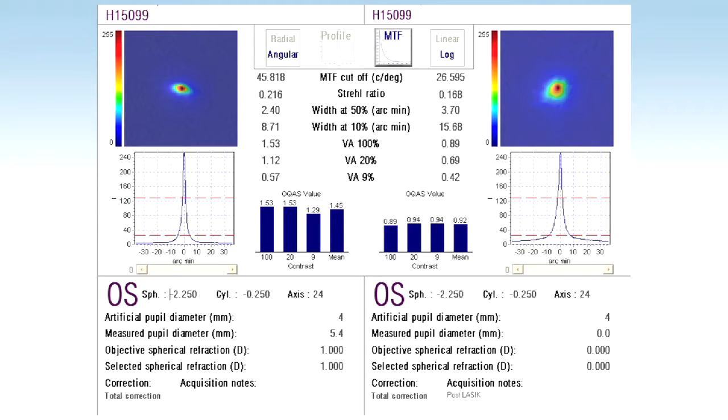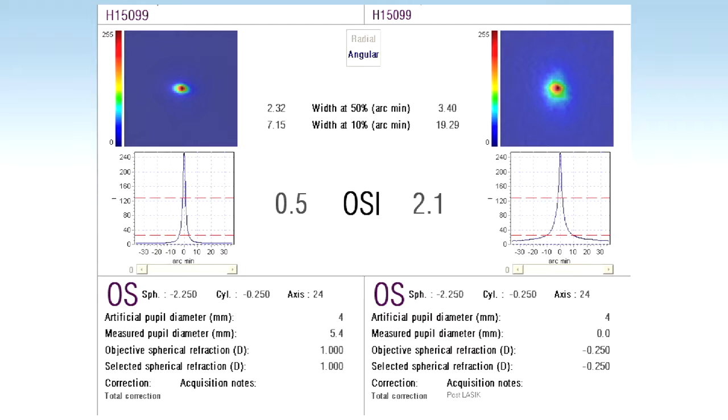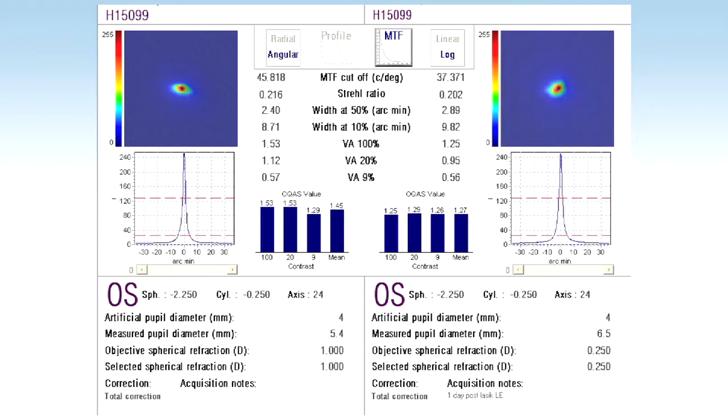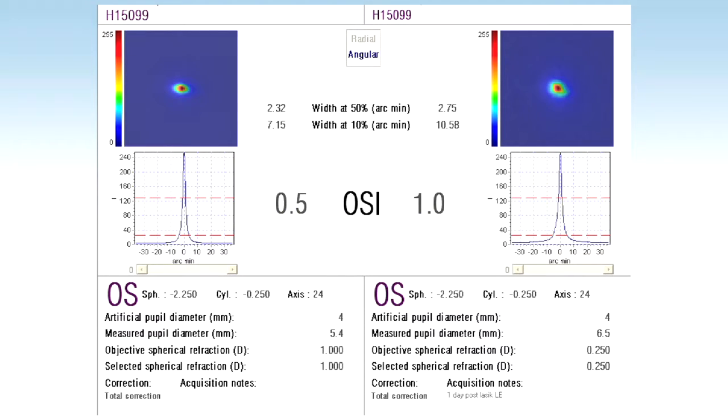That's why when patients come in and say they have halos at night or can't see that well, and you measure their vision as 20/20, the HD Analyzer gives you a metric — a value that should correlate exactly with the patient's satisfaction and visual performance. The HD Analyzer is the only instrument available today that can give you that objective measure of visual performance, which will correlate with outcomes of your refractive and cataract surgery, and objectively measure what the patient is explaining to you subjectively.